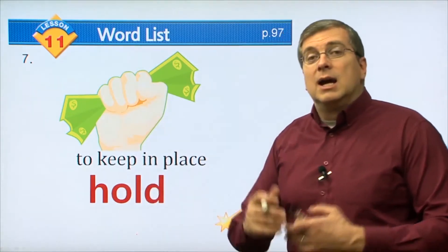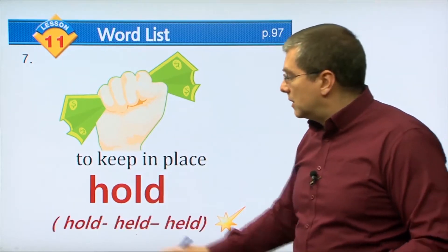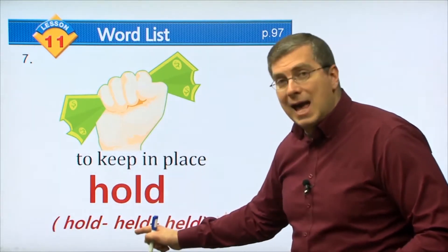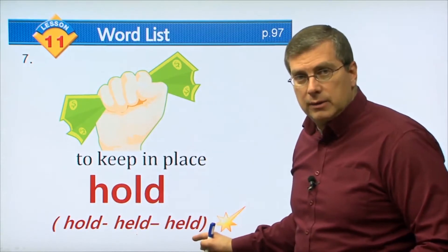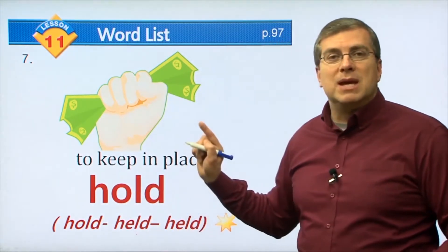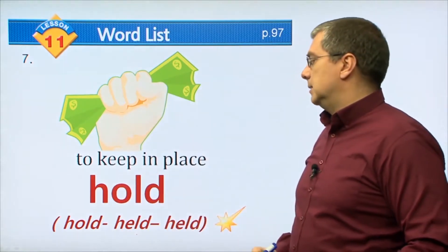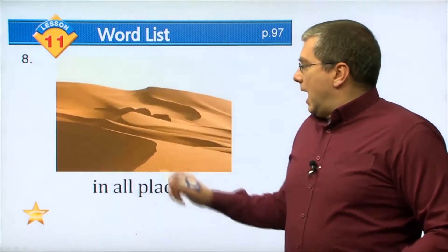Now, hold is an irregular verb - it changes. We say hold, held, held: hold present tense, held past tense, and held past participle. Next word. I kind of talked about this before, a little bit, when I talked about air. I said air is all around us in all places.